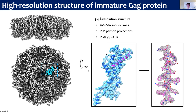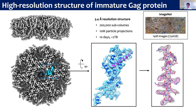To put that into perspective, the ImageNet database has 14 million images and is 150 gigabytes in size because the images are smaller. So this is essentially on the order of ImageNet in number of images, but our images are a lot bigger — that's why we end up with two terabytes of data.